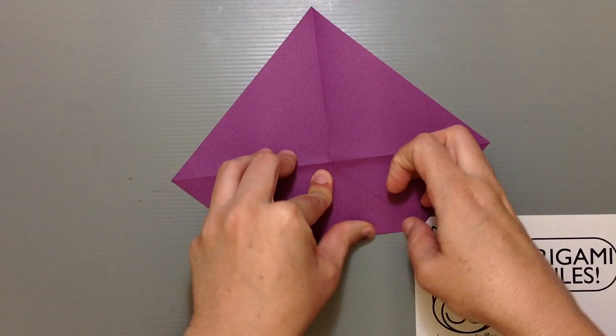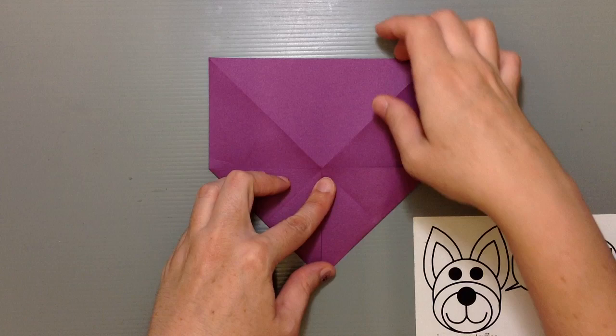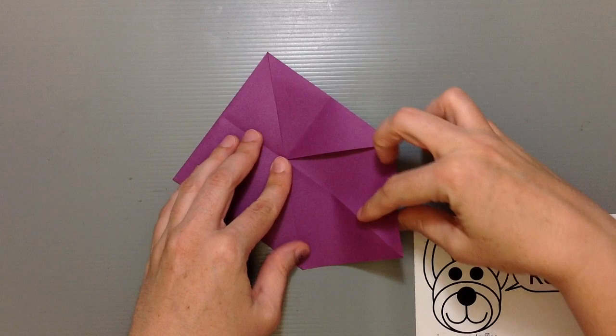Then with the color side facing up, I'm going to fold each of these four points to the center. And this is called a blintz base or a zabuton base in Japanese because a zabuton is a cushion you sit on on the floor that kind of looks like this nice little square. So I'll get all four of these sides folded in here.